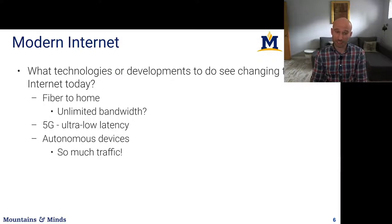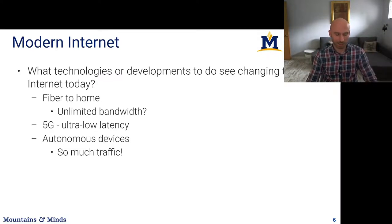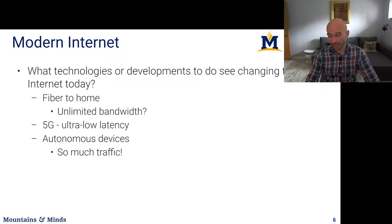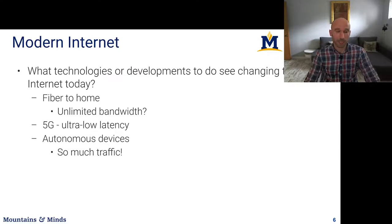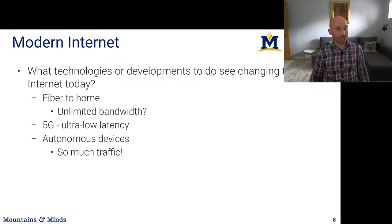We're going to have more autonomous devices that will produce so much traffic that the idea of unlimited bandwidth will go away pretty quickly. Humans are limited in bandwidth consumption by our limited attention spans and the fact that our eyes, ears, and senses can only receive so much data. With autonomous devices, they can produce and consume much more data than humans can, and there can be many more of them than of us. So the future internet will not so much cater to people as consumers, but to devices as consumers.